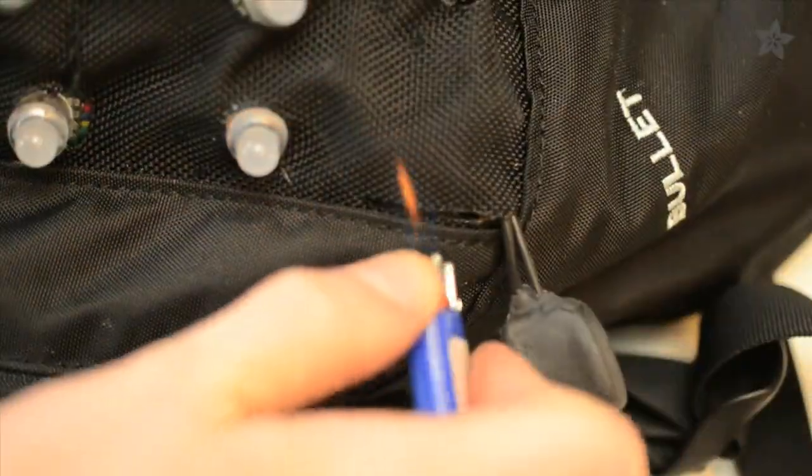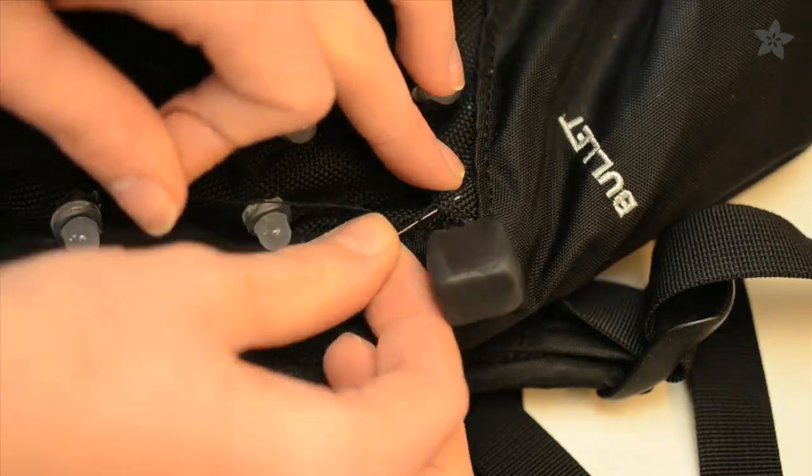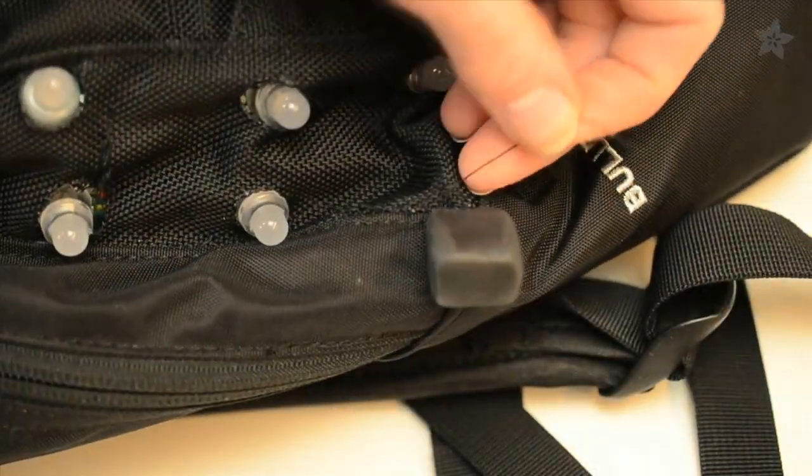Just cut a small slit for the switch to poke through, then heat seal the nylon as before, and then stitch the switch in place, adding a zip tie to stitch to if you think it's necessary.